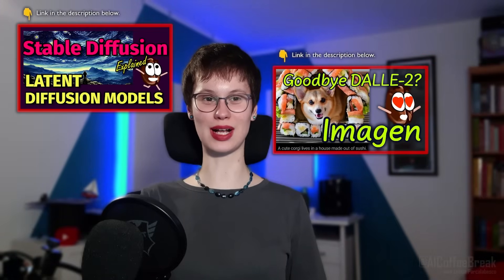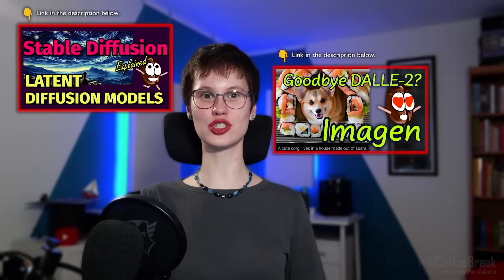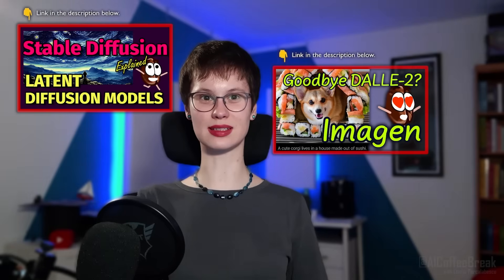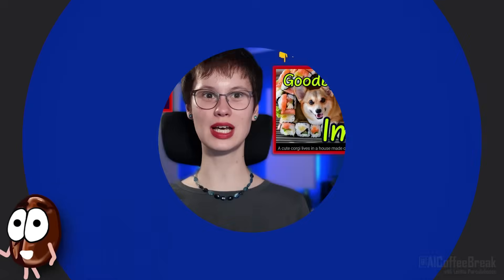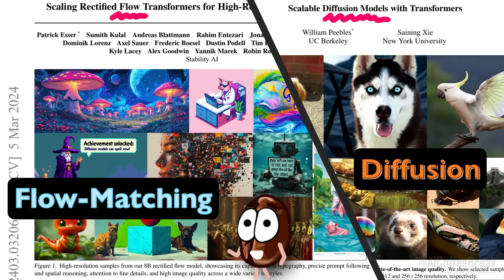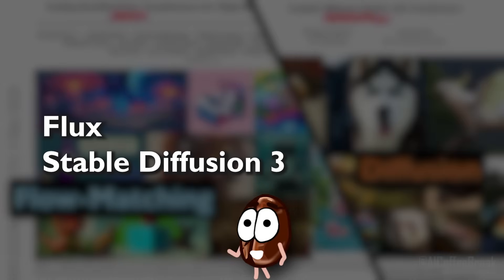You might have noticed that while diffusion models like Stable Diffusion or Imagine made the state-of-the-art image generators just a couple of years ago, these days diffusion models see competitors in flow matching models like Flux and Stable Diffusion 3 that seem to be steadily taking over the spotlight. So what changed? Why are researchers suddenly shifting from diffusion to flow matching?